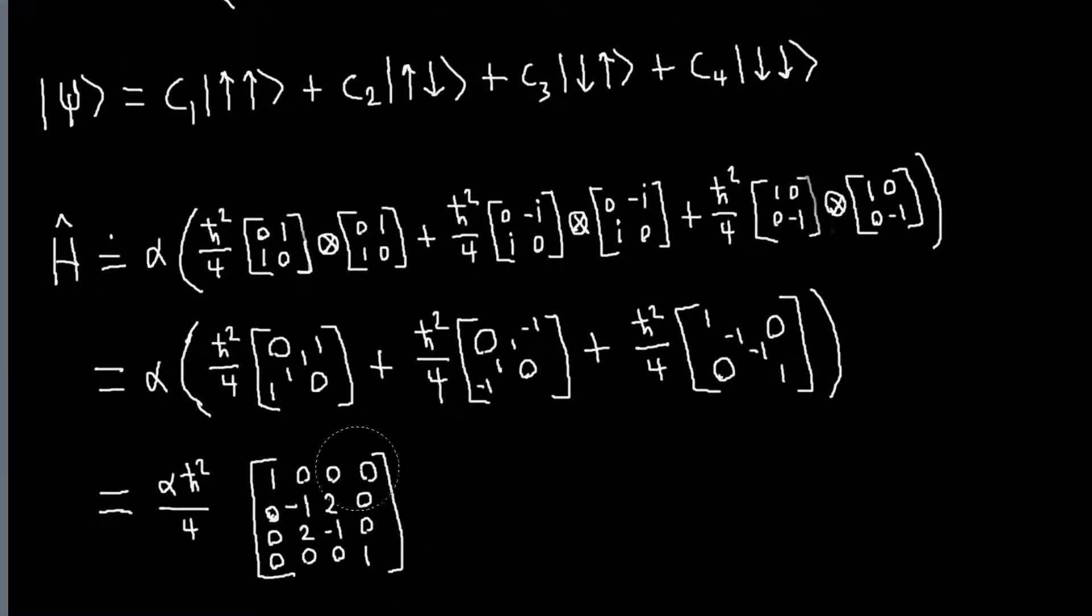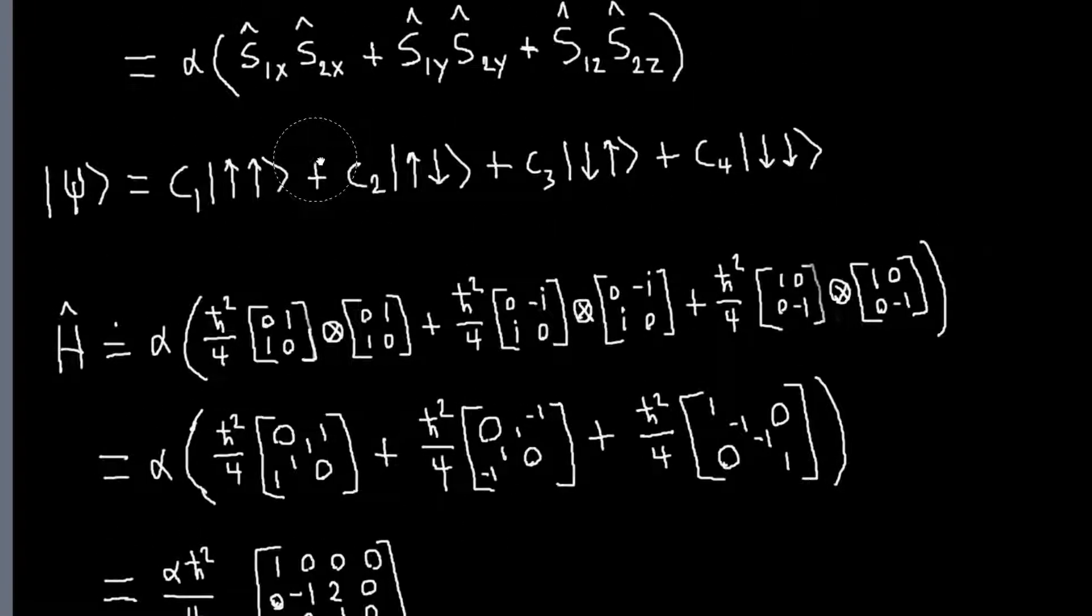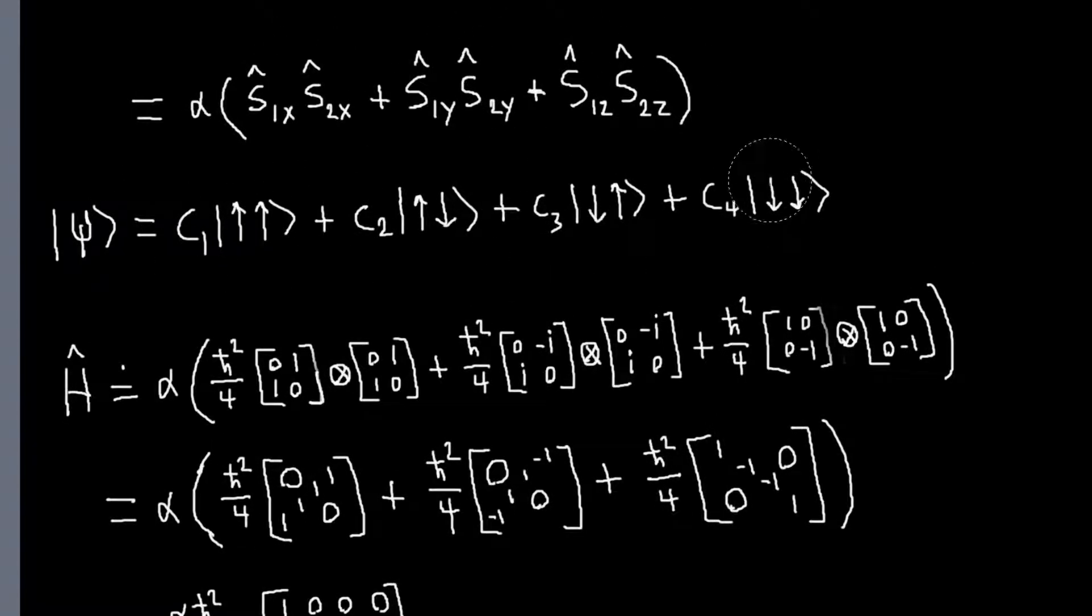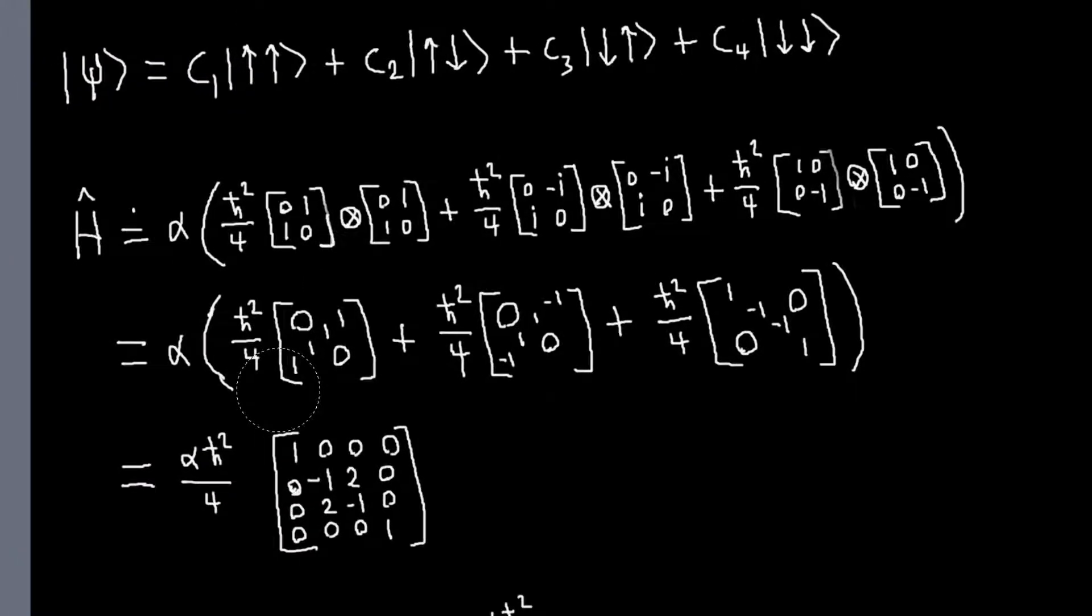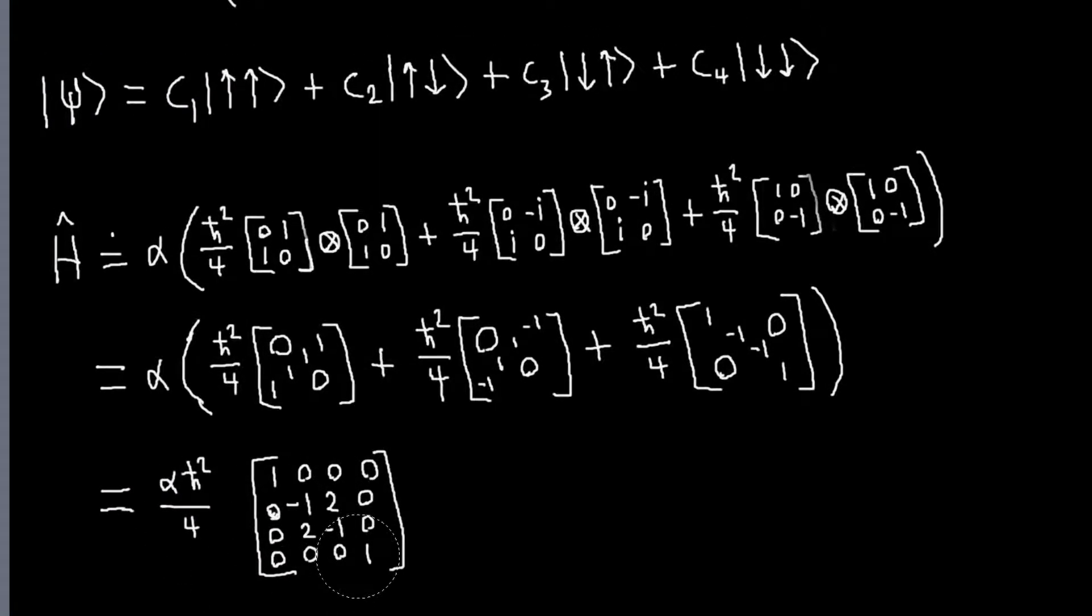From this, we can immediately see that our Hamiltonian is not diagonal. So this basis, these are not eigenvectors of our Hamiltonian. So we have to find the eigenvectors and eigenvalues first to solve our problem.